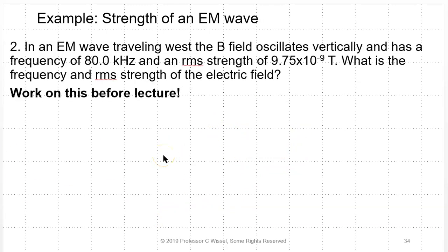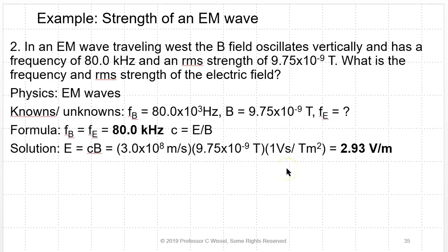Example: An electromagnetic wave is traveling west with the magnetic field oscillating vertically. It has a frequency of 80 kHz (8×10⁴ Hz) and B_RMS of 9.75×10⁻⁹ T. The frequency of the electric field is the same — 80 kHz — because both components rise and fall together. Using C = E/B, so E_RMS = C × B_RMS, the electric field RMS strength is 2.93 V/m.